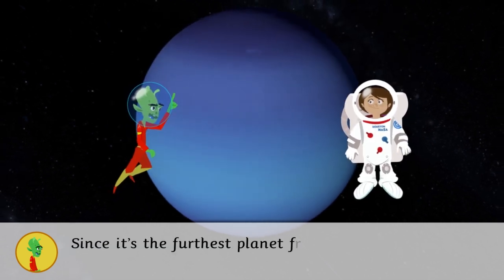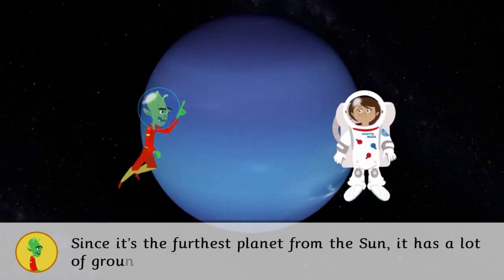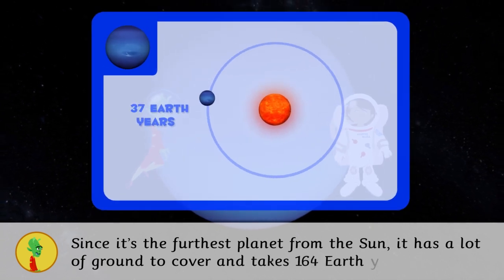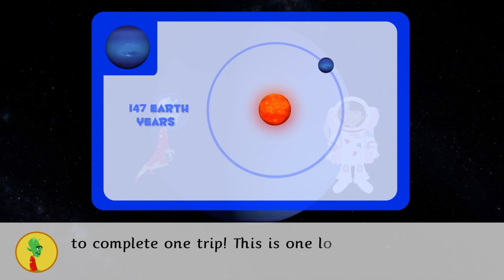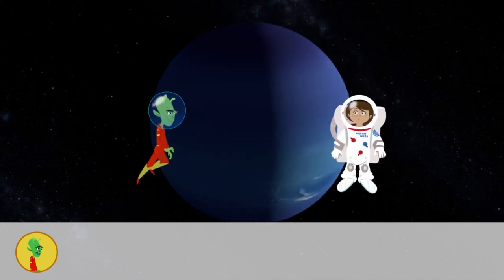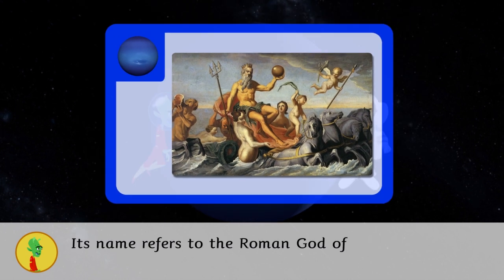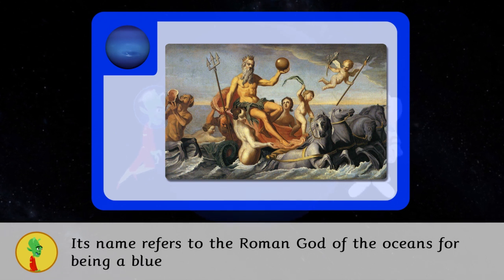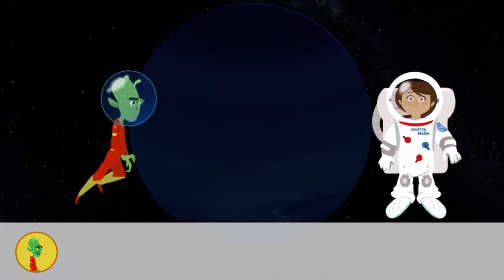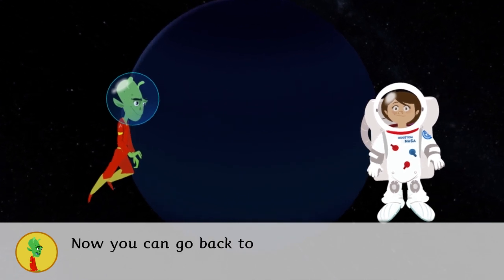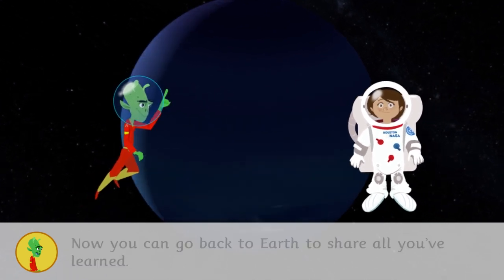Since it is the furthest planet from the Sun, it has a lot of ground to cover and takes 164 Earth years to complete one trip. This is one long year. Its name refers to the Roman god of the oceans for being a blue planet. Did you like your quick trip around Neptune? Now you can go back to Earth to share all you've learned. Have a good trip!